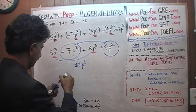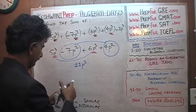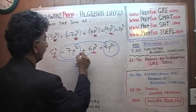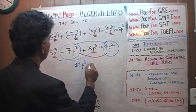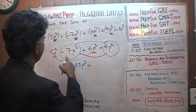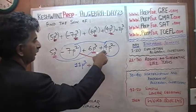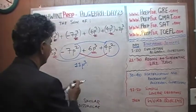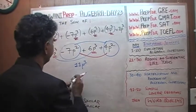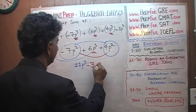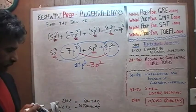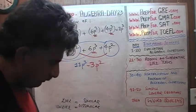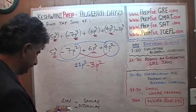And then finally for the p squared terms: we have negative 7 and positive 4, which gives us negative 3. So the result is negative 3p squared. The full answer is 11p cubed minus 3p squared.